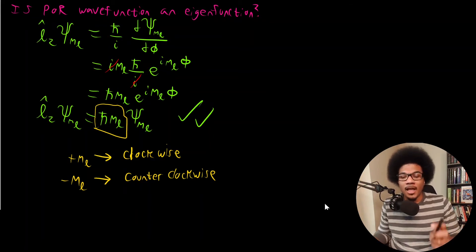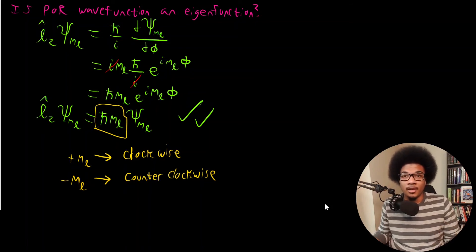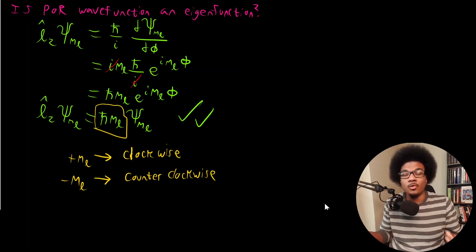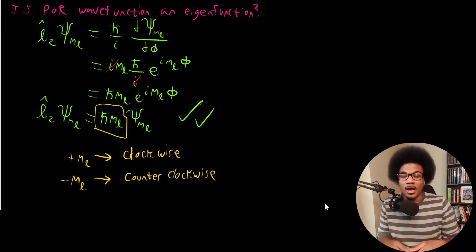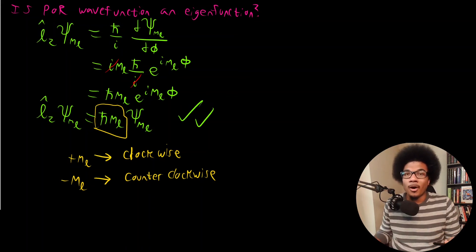So that's the angular momentum operator. Next up, we're going to start looking at three dimensions. The problems we've looked at so far were all the two-dimensional particle on a ring — now we're going to look at the three-dimensional particle on a sphere.